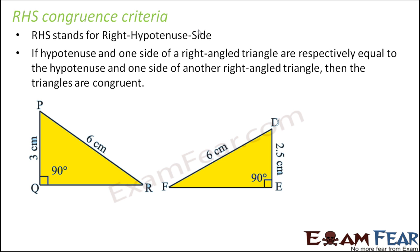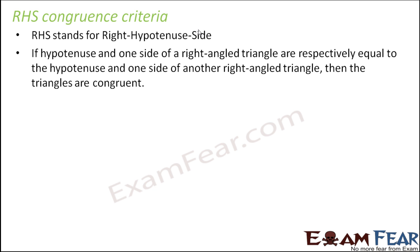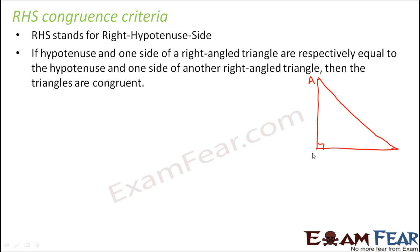As per this criteria, if you have two right angle triangles — let me take just one right angle triangle to first clarify which side is called what. So let us say this is a right angle triangle ABC, which is right angled at B. The side exactly opposite to the right angle is the hypotenuse, which is supposedly the longest side of this triangle.